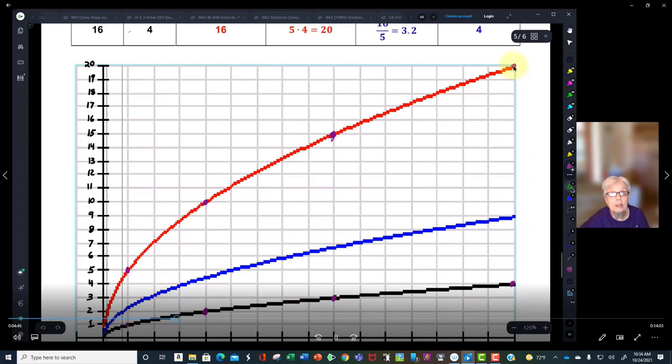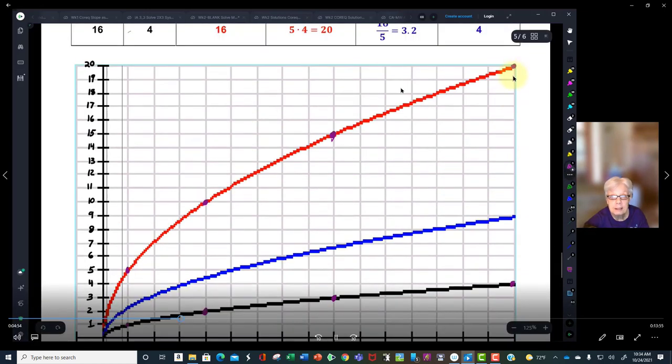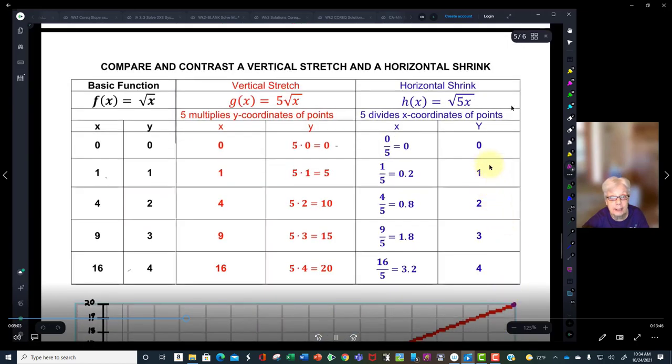So vertical stretches are actually very straightforward. This graph is just the stretched version of this graph. Now let's look at a horizontal shrink. We're going to use the same number 5, but now it's under the radical with the x.